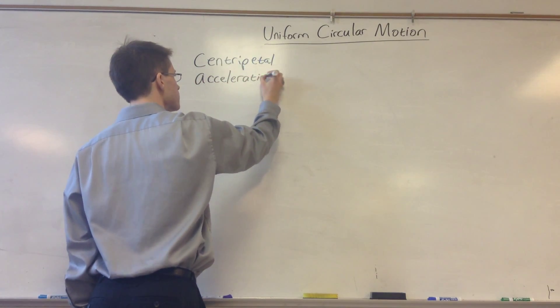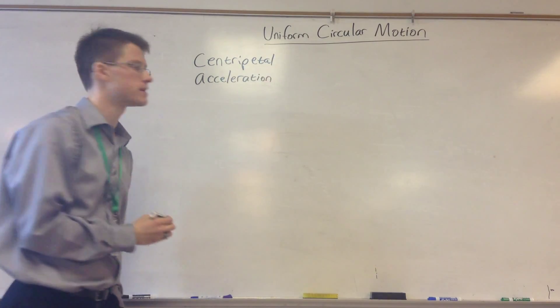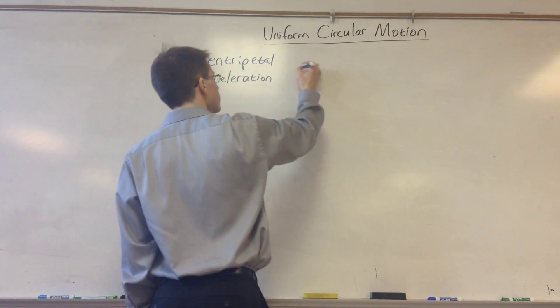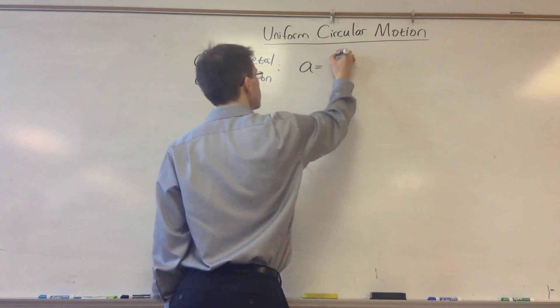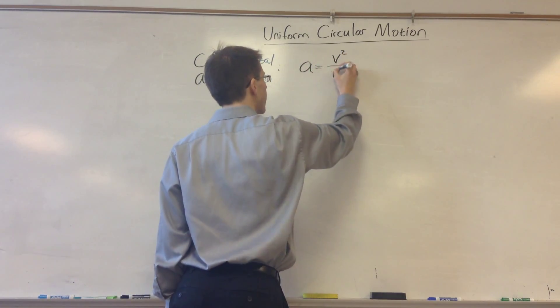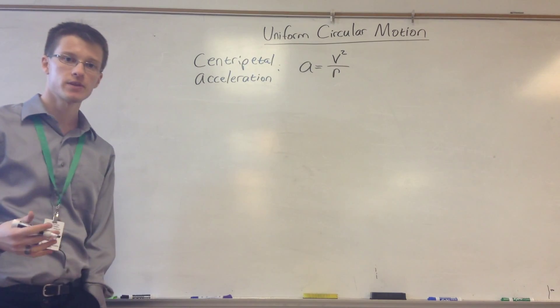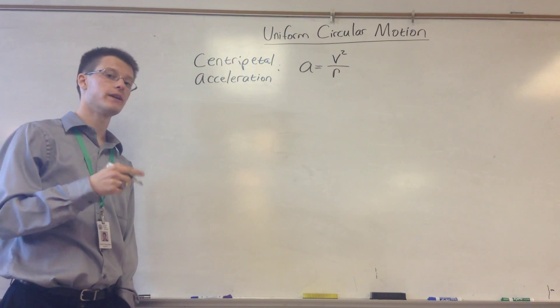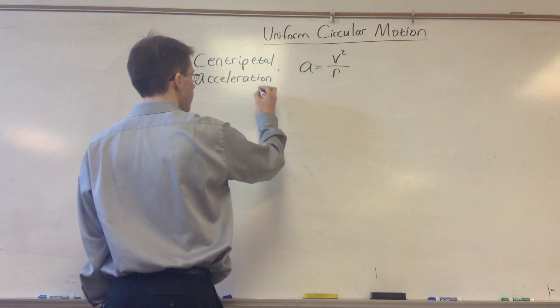Centripetal means center-seeking, center-seeking acceleration. The equation for that is the centripetal acceleration is equal to v squared divided by r, where v is your tangential velocity, and r is the radius of the circle that you're forming.